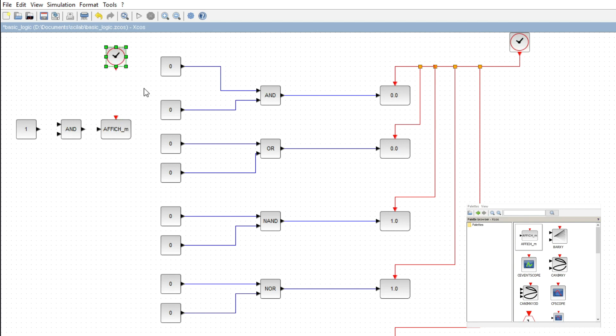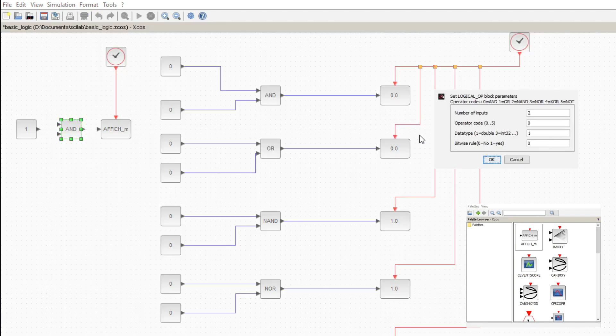You need the clock tool only for AFFICH. As you see here, we have an AND gate. How to change this AND to a different logic gate?